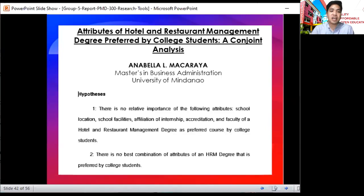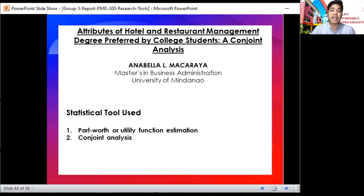The last is about attributes of hotel and restaurant management degree preferred by college students, a conjoint analysis. The research aim is to identify the best sets of attributes that students prefer for hotel and restaurant management degree as a course in college. The researcher used part-worth or utility function estimation to identify the relative importance of the attributes, and conjoint analysis to define the best combination of attributes of an HRM degree as preferred by college students.